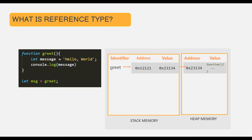When we are assigning this greet function to the message variable, another identifier called message will be created. Since greet is storing the reference to this function, that same reference will be assigned to the message variable. So the message variable will also point to the same address and the same function. That's why, just like using parentheses on greet executes the function, using parentheses on message will also execute the same function.